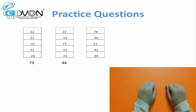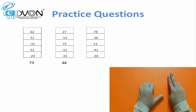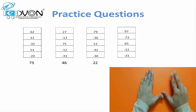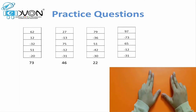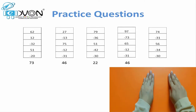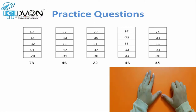Next question: 79, minus 36, plus 51, minus 42, minus 30 — answer 22. Next question: 97, minus 73, plus 65, minus 12, minus 31 — answer 46. Last question on fingers: 74, minus 31, plus 56, minus 34, minus 30 — answer 35.